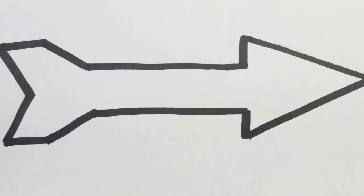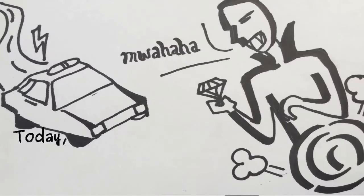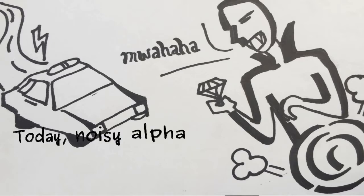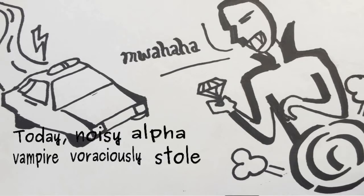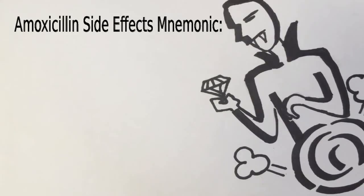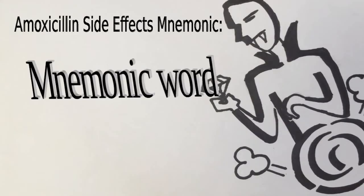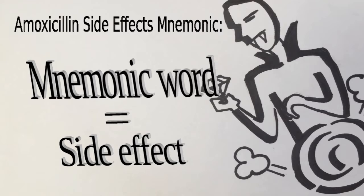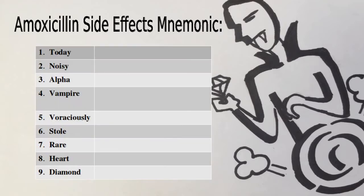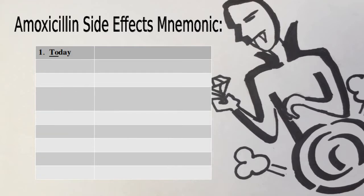Now let's proceed with the mnemonic, which is: 'Today Noisy Alpha Vampire Voraciously Stole Rare Heart Diamond.' Each word represents a corresponding side effect. Please notice the letters at the beginning of each word, because that will be our basis for recalling the side effects.